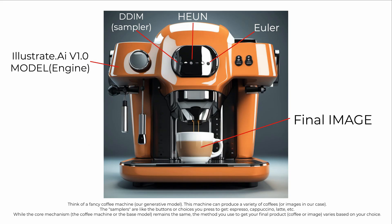Imagine a coffee machine analogy. Think of a fancy coffee machine as our generative model. This machine can produce a variety of coffees, or images in our case. The samplers are like the buttons or choices you press to get espresso, cappuccino, latte, etc. While the core mechanism — the coffee machine or the base model — remains the same, the method you use to get your final product, coffee or image, varies based on your choice.